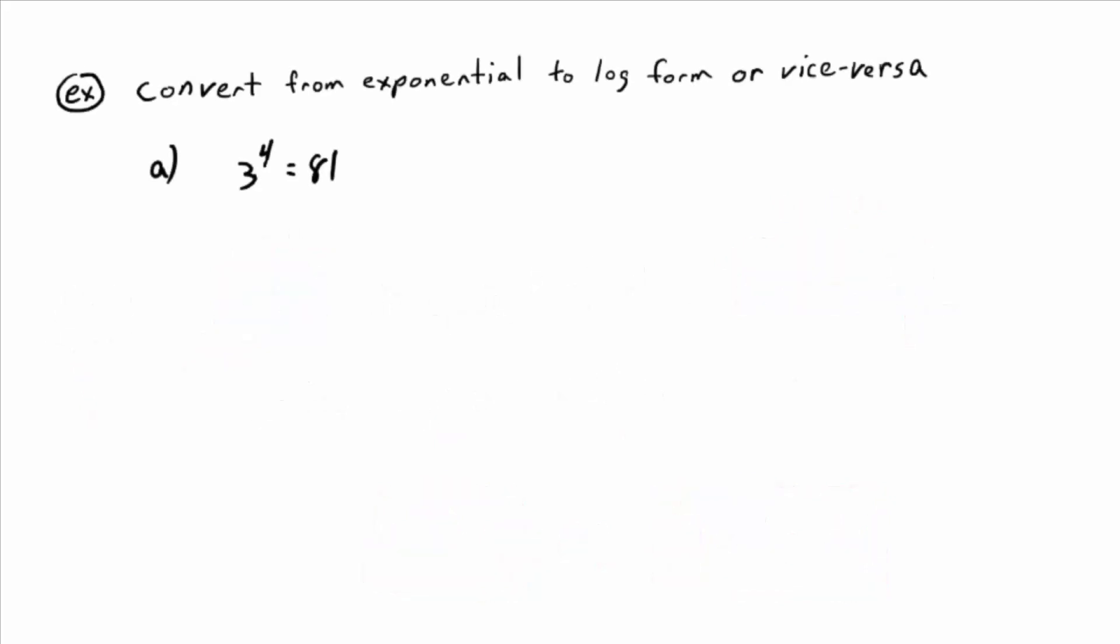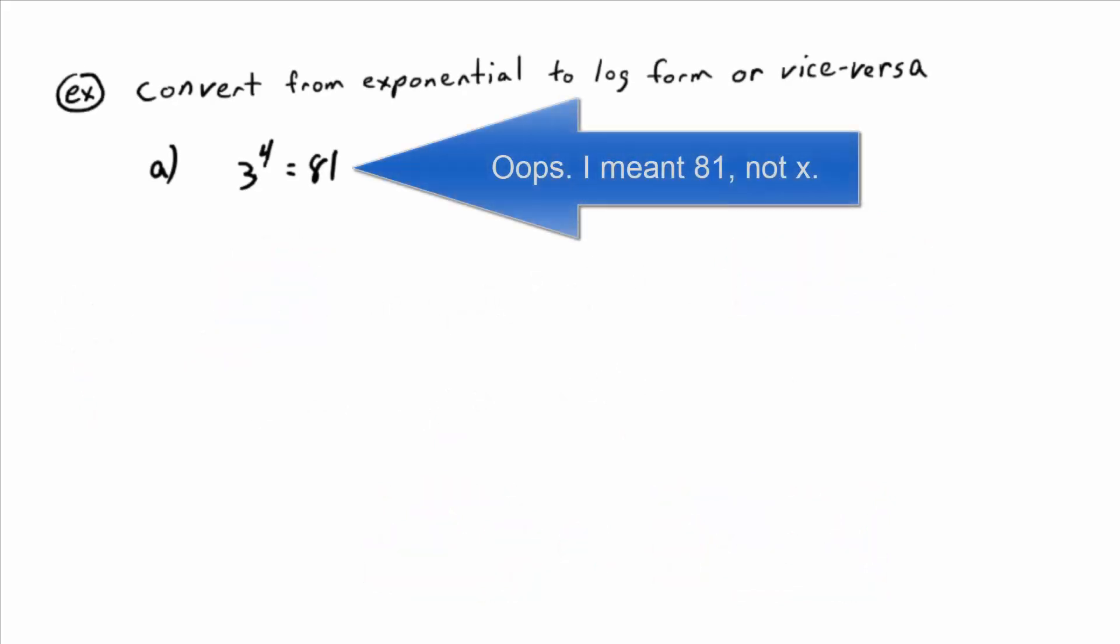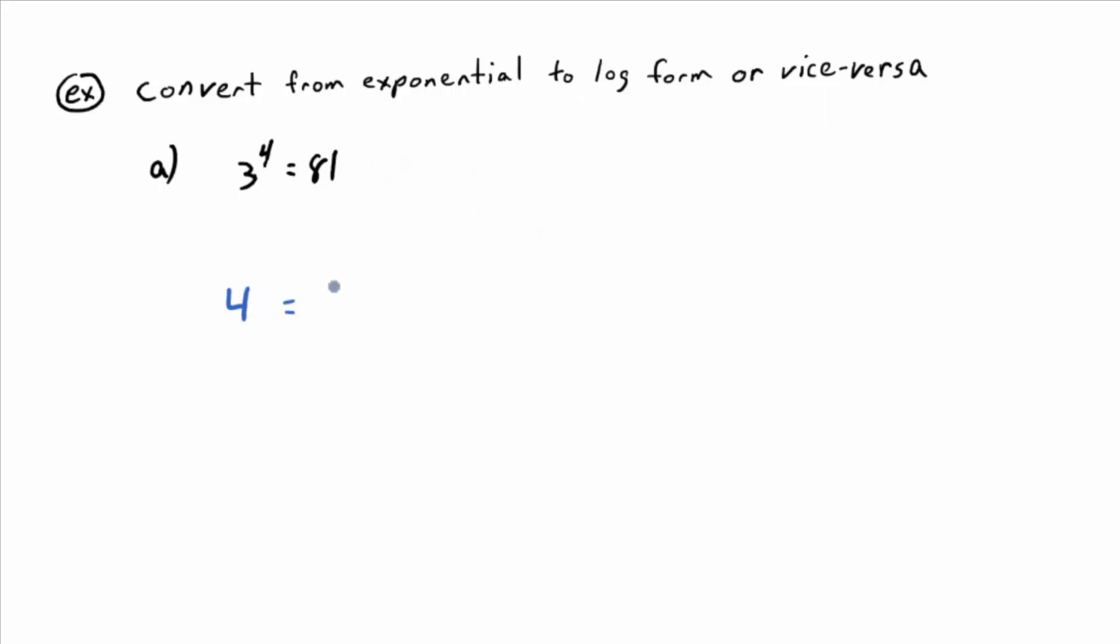So in part a, we have three to the fourth power equals 81. We want to convert that to log form. So you guys tell me what goes by itself. The four, and then the subscript on the logarithm is base three. And then the input of the logarithm is 81. It's that easy. I feel like I'm selling you math today for only $19.99. If you want to, you can put in parentheses to remind yourself, this is not three to the 81 power on the right side. Log three is the name of the function. 81 is the input. Four is the output.